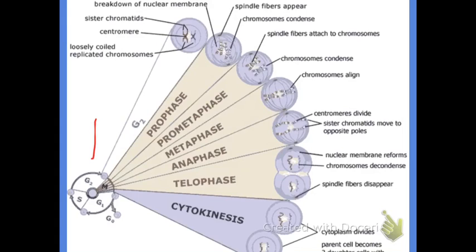Notice in this diagram there is M, G1, S, and G2. The next video is going to give you details on that. Mitosis is just one part of the cell cycle, and you'll see where it all fits in soon.